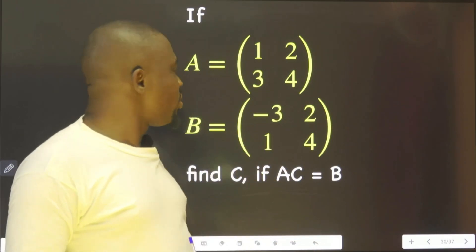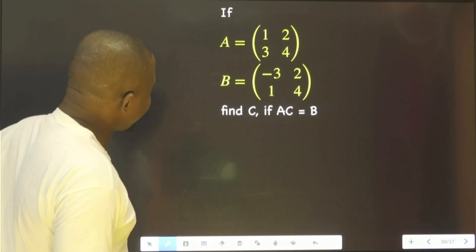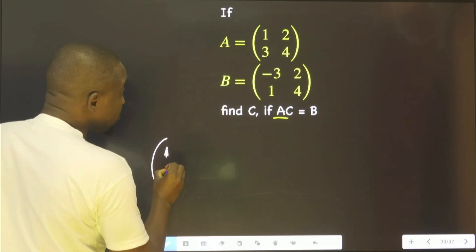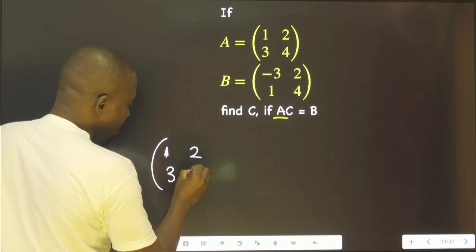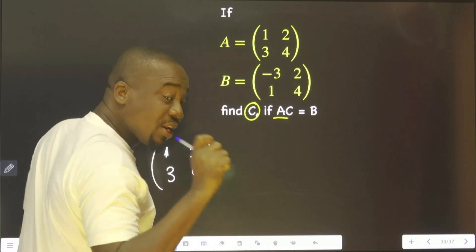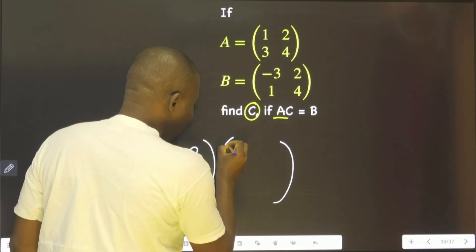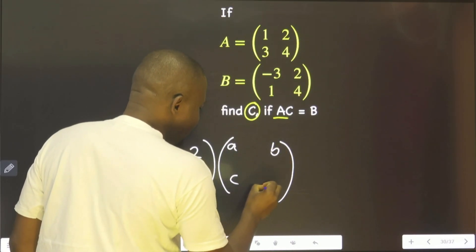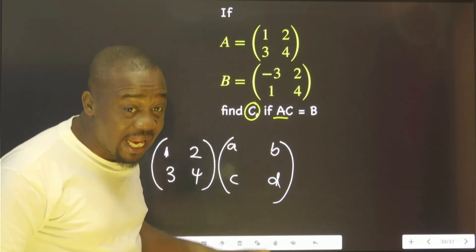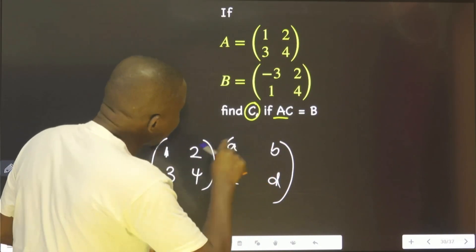This will lead us toward equations. So, what is the question saying? This is A — that is 1, 3, 2, and 4. We are looking for another matrix that is C. Let's call its elements a, b, c, d. These are the elements of matrix C that we don't know. We will be solving for each of these elements.